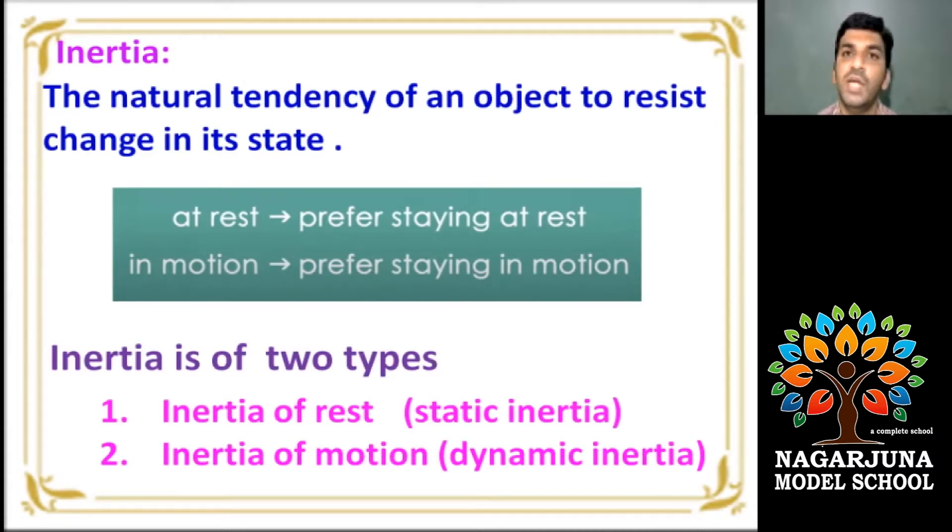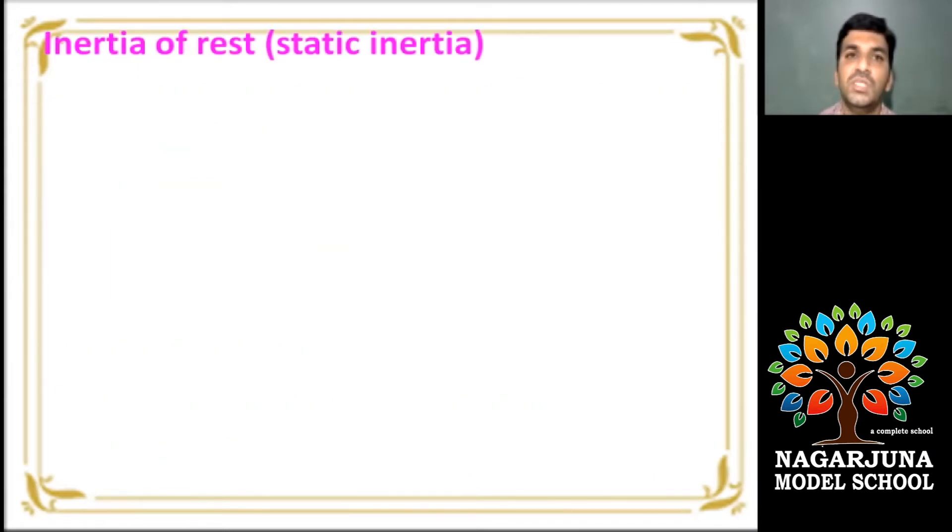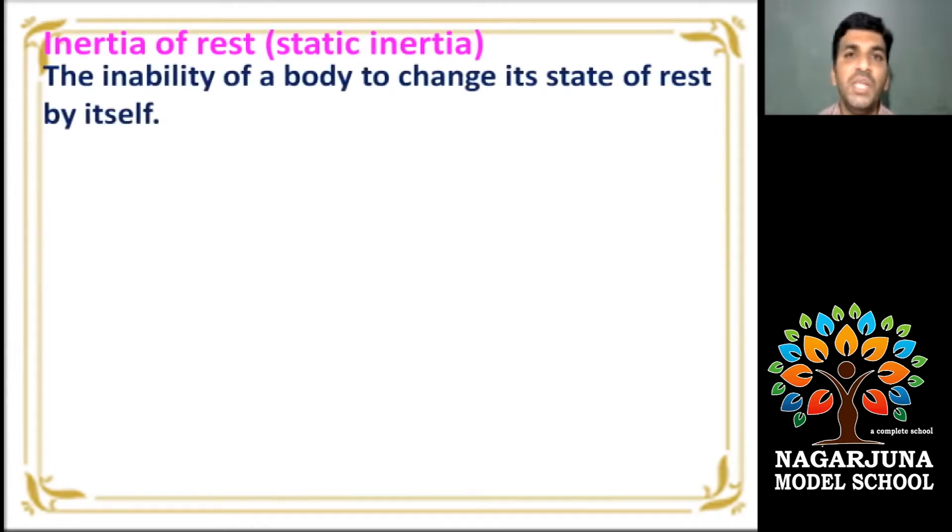Inertia is of two types. Inertia of rest. It is also called as static inertia. Inertia of motion. It is also called as dynamic inertia. Let's know about inertia of rest or static inertia.